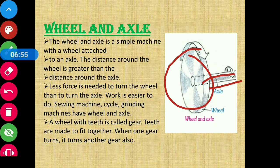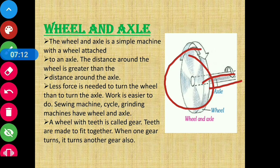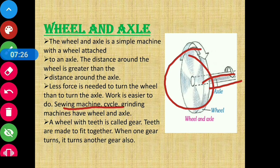Here we turn the wheel, which also turns the axle. We don't need to turn the axle directly — that would be difficult. We turn the wheel, which turns the axle automatically, and then the machine starts performing work very easily with less force applied. So with less force, we get effective work done. Sewing machines, cycles, and grinding machines — all these simple machines are based on the wheel and axle.